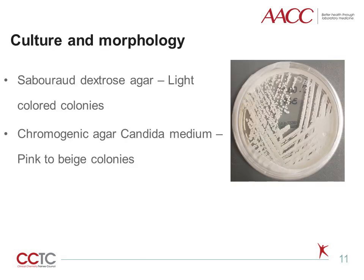The organism has been shown to grow easily on Sabouraud dextrose agar plates, appearing as light-colored colonies, and on chromogenic agar CHROMagar medium, as pink to beige-colored colonies. Microscopically, C. auris shows ovoid to elongated budding yeast, which seldom forms rudimentary pseudohyphae. In essence, macroscopically or microscopically, C. auris does not show any distinct features to differentiate it from other Candida species.